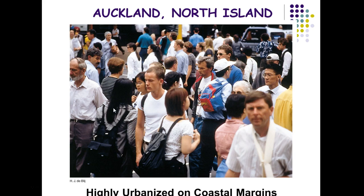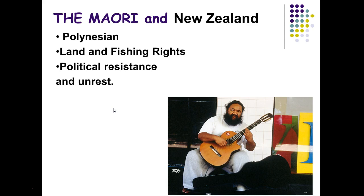Both Australia and New Zealand are highly urbanized populations, and their populations are changing as we see increasing immigration from Asian countries. This is a source of tension but also an important element in growing their economies in the decades ahead. The Maori are the native peoples of New Zealand — they share Polynesian roots with Hawaiians and were much later arrivals than the Aborigines of Australia, but we see similar land, resource rights, and political issues that make it a central concern in New Zealand.